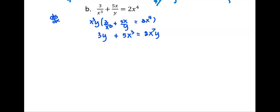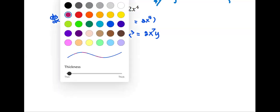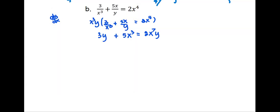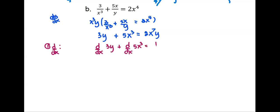Much cleaner. Then we're going to go with the first step of implicit differentiation. The first step, we are going to find the derivative with respect to x for each term. So d by dx of the first term 3y, plus d by dx of the next term 5x to the third, equals d by dx of 2x to the seventh times y.